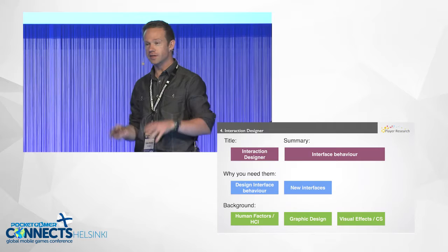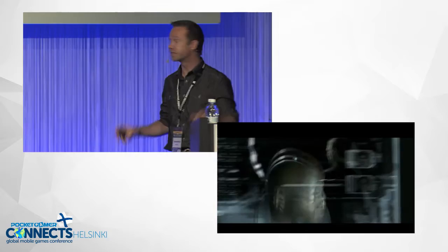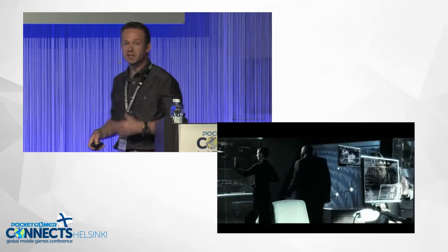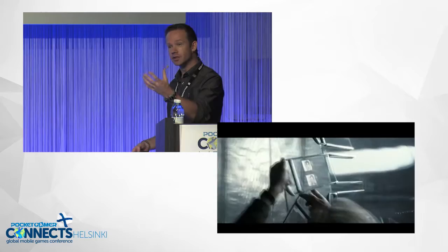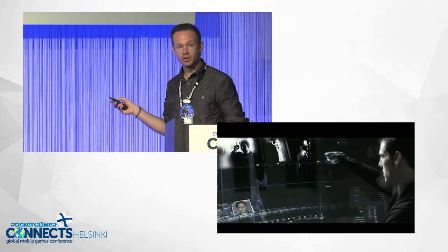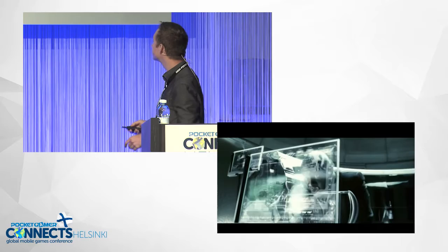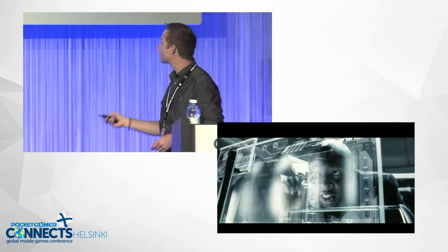Number four is the interaction designer — concerned with the interface itself. You've probably seen the scene in Minority Report where Tom Cruise uses a futuristic system; that was done by an interaction designer. Their job is to come up with new interfaces, especially whenever new systems come out, like Kinect. In this case there's a genuine working system built by Jeff Han, whose company is called Perceptive Pixel — not mocked up Hollywood veneer. That's the realm of the interaction designer.